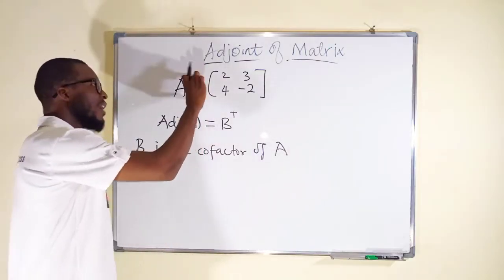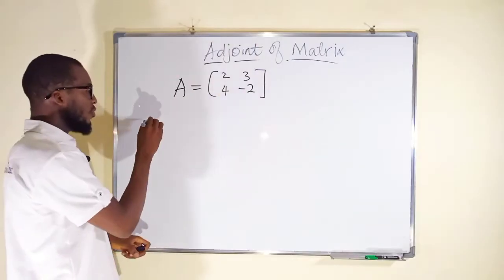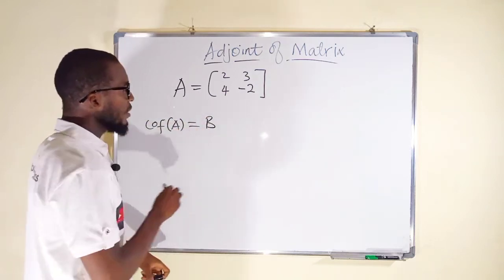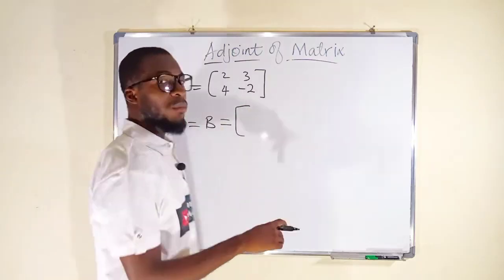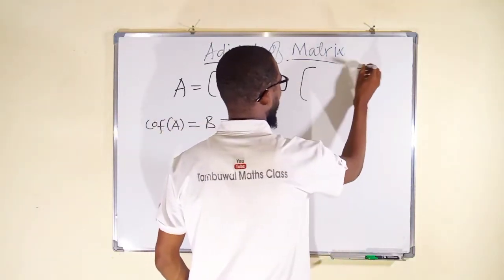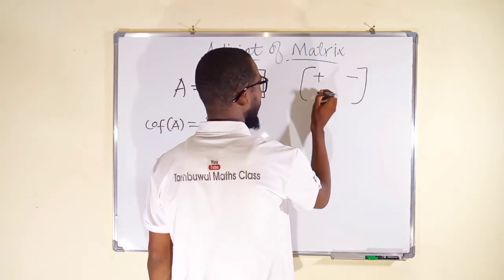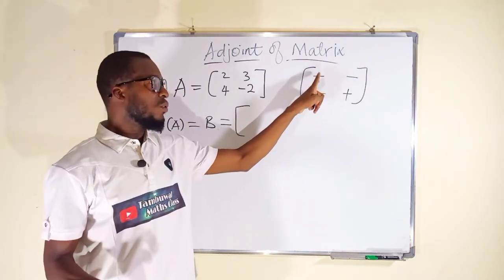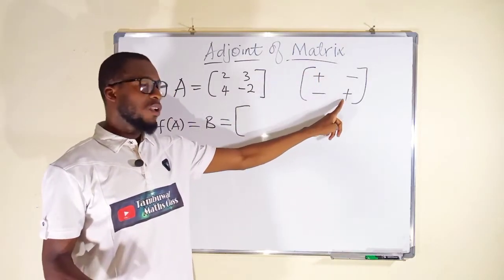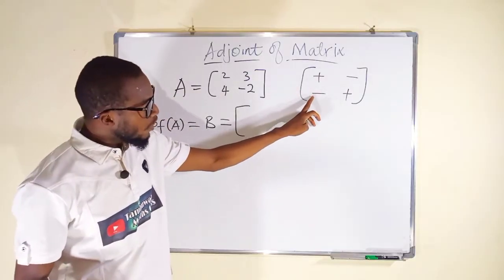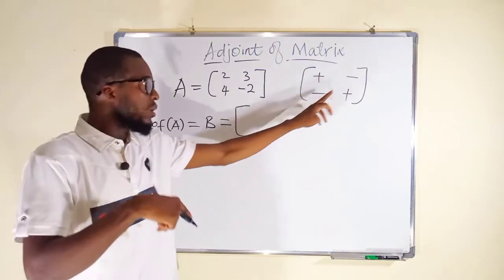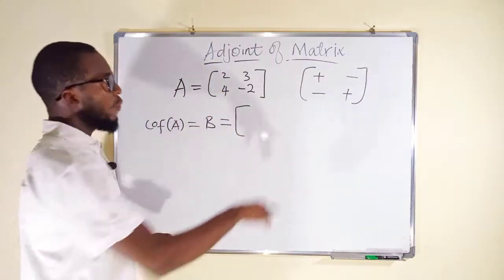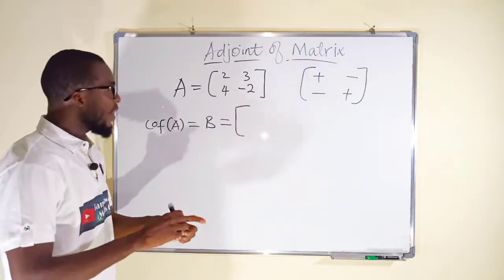Now let us find the cofactors of matrix A, which we denote as B. Recall the sign pattern: positive, negative, negative, positive. Wherever the position sum is even you have a positive sign. First row, first column: 1+1=2, even — positive. Second row, second column: 2+2=4, even — positive. Second row, first column: 2+1=3, odd — negative. First row, second column: 1+2=3, odd — negative.